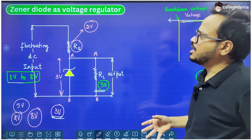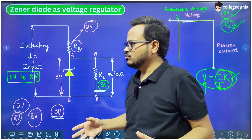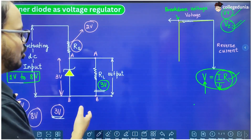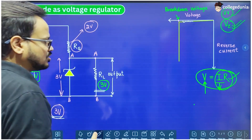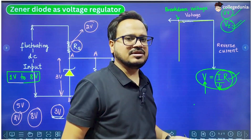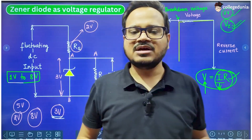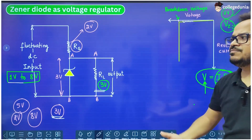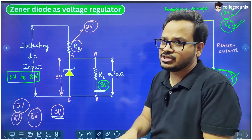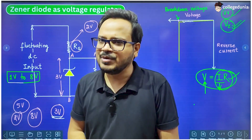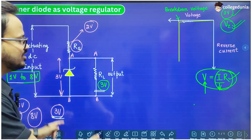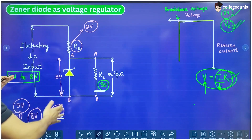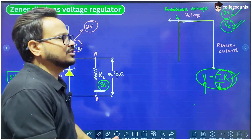So that is the working of Zener diode as a voltage regulator. I hope everything is clear to you — this is a very important topic. Right now it is not a part of class 12 CBSE syllabus, but there are other boards in which you have to study this topic. So prepare it very carefully. You have to draw this diagram, write the construction, write the working — everything.